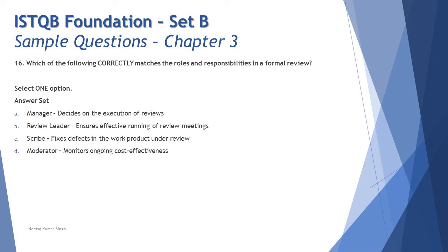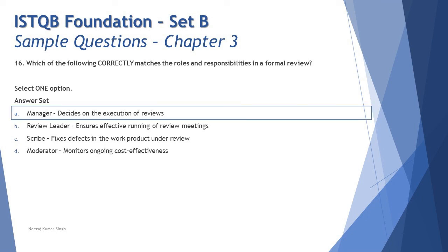Option D is wrong — the moderator is not responsible for monitoring cost effectiveness; that is done by the manager. Option C is wrong — the scribe takes notes for the review report; fixing defects is the responsibility of the author. Option B is wrong — it's the moderator, not the review leader, who ensures effective running of review meetings. The right answer is A: the manager decides the execution of reviews, including planning what will happen, how it will happen, and who will participate.